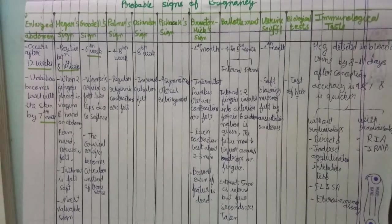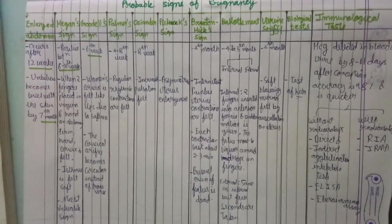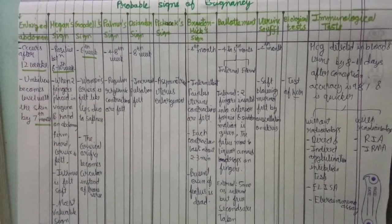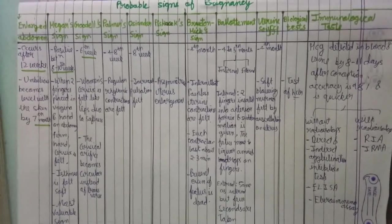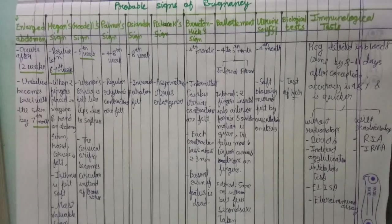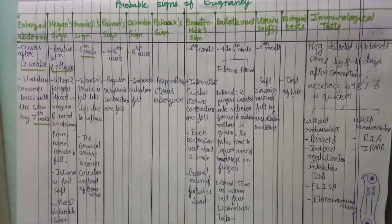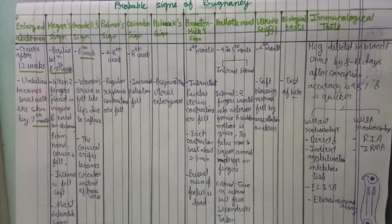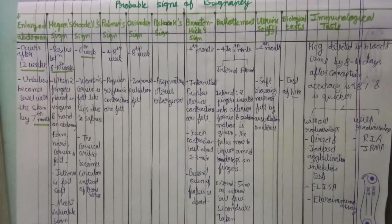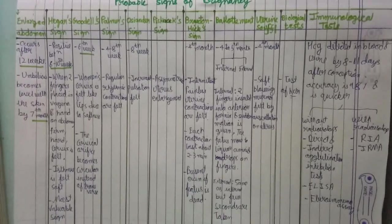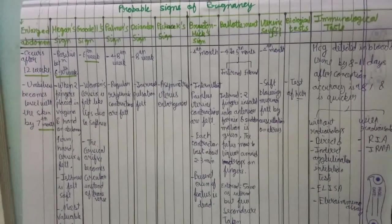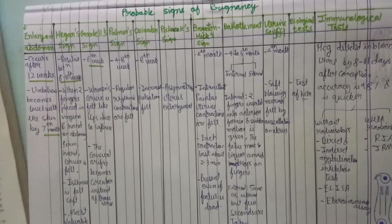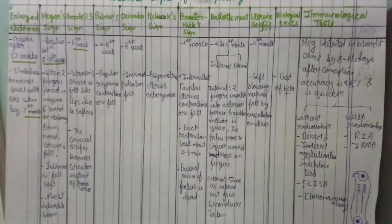Immunological tests also depend on HCG, which can be detected 8 to 11 days after conception. They are more accurate because results are quicker, no animal is required, and sensitivity and accuracy is about 98 percent. These tests are divided into those without radio isotope — such as ELISA (enzyme-linked immunosorbent assay) and fluoroimmunoassay — and those with radio isotope — such as RIA (radioimmunoassay) and IRMA (immunoradiometric assay). They also include indirect and direct agglutination inhibition tests.